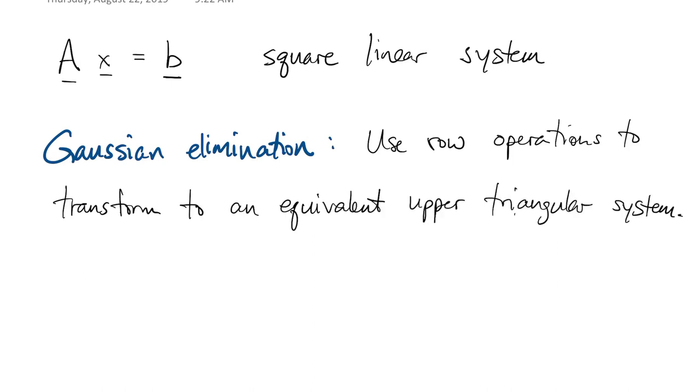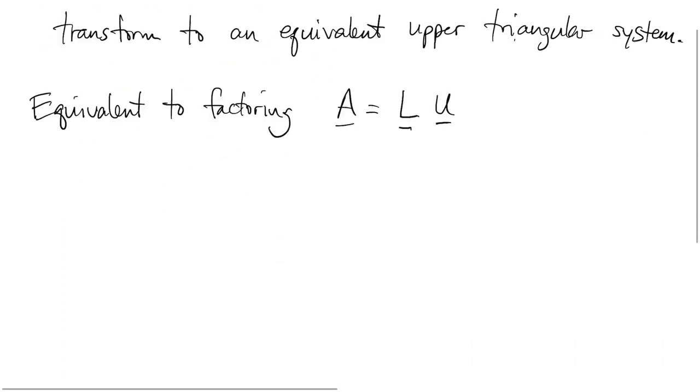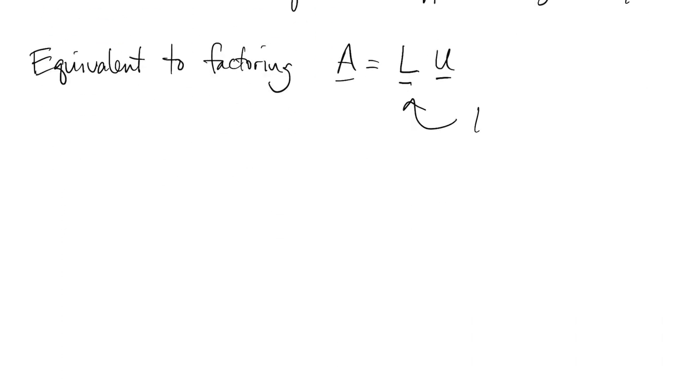Of course, we know how to solve that by back substitution. It turns out that Gaussian elimination is equivalent to factoring the matrix A into the product of two matrices, L and U. L is lower triangular and U is upper triangular.